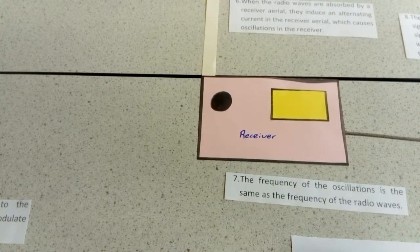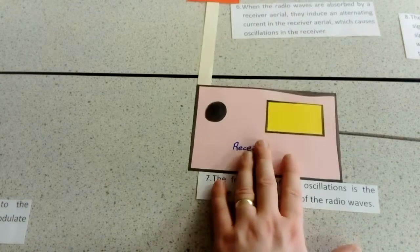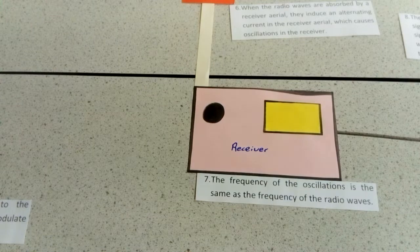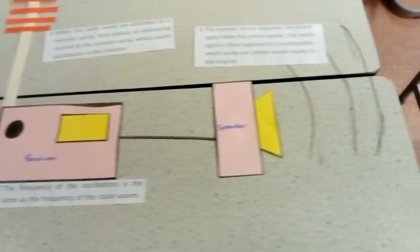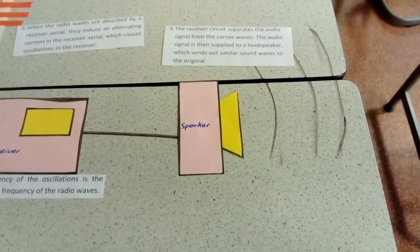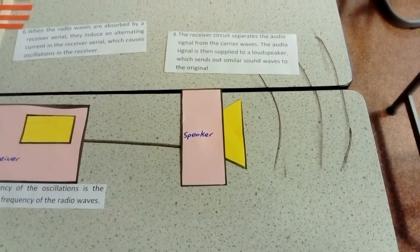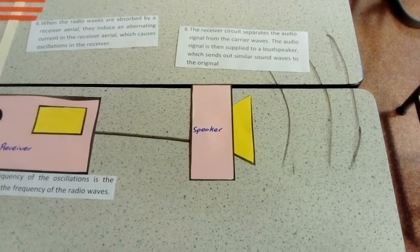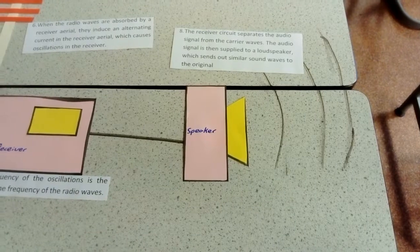The receiver extracts the carrier wave, leaving just the audio wave. The receiver circuit separates the audio signal from the carrier wave. The audio signal is then supplied to a loudspeaker which converts that audio wave back into a sound wave.